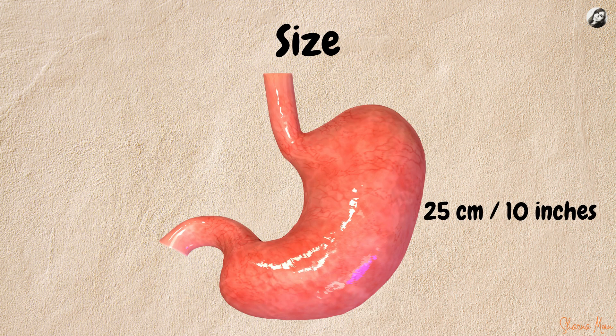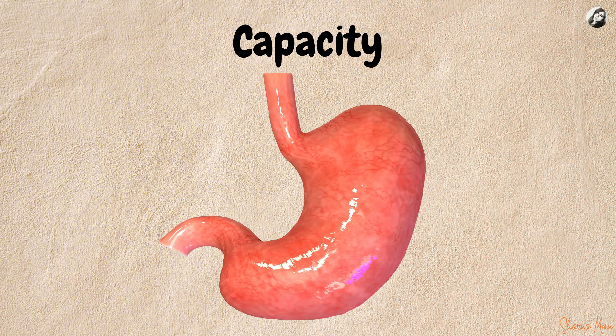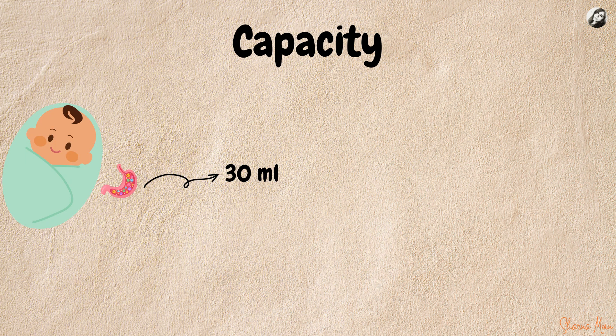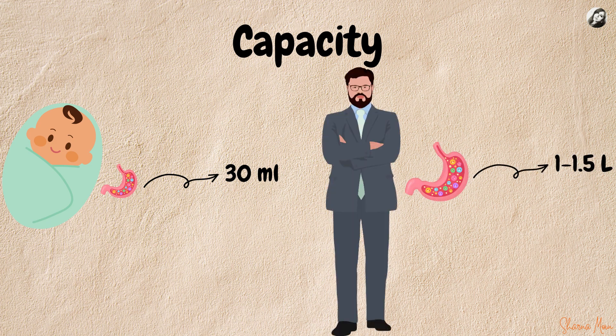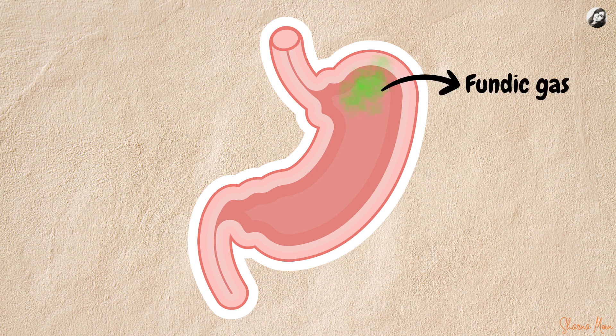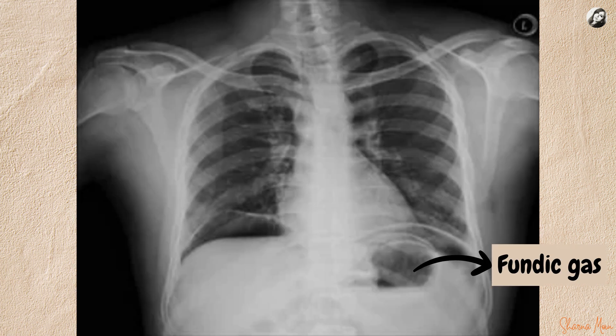The stomach is about 25 centimeters long, or about 10 inches. The capacity of the stomach is variable. At birth the capacity is only 30 ml, that is one ounce. In adults the capacity is 1 to 1.5 liters on average, that means 1000 ml to 1500 ml. There is an interesting fact: even when the stomach is empty, the fundus of the stomach contains air known as the fundic gas, which is approximately 50 ml.